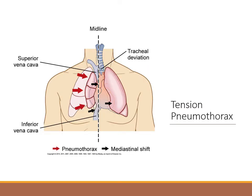Tension pneumothorax is a medical emergency with both the respiratory and cardiovascular systems affected. Manifestations include dyspnea, marked tachycardia, tracheal deviation, decreased or absent breath sounds on the affected side, neck vein distension, cyanosis, and profuse diaphoresis. If the tension in the pleural space is not relieved, the patient is likely to die from inadequate cardiac output or severe hypoxemia. Treat with needle decompression and chest tube insertion.